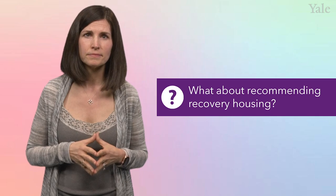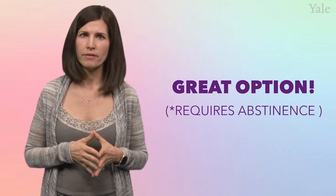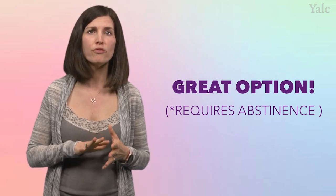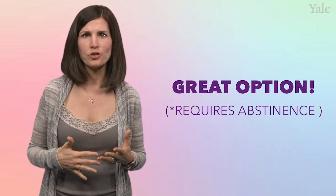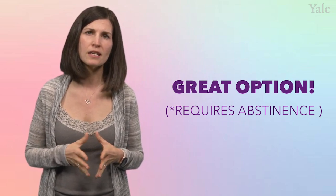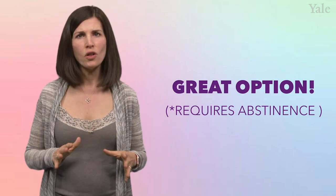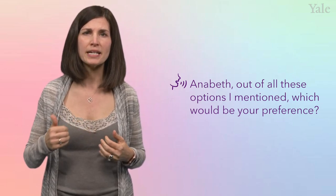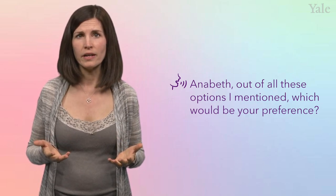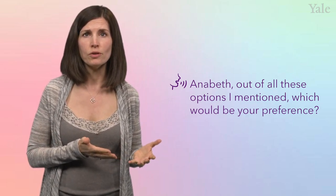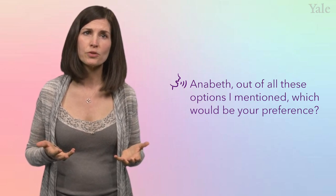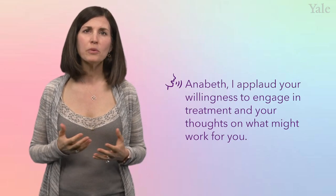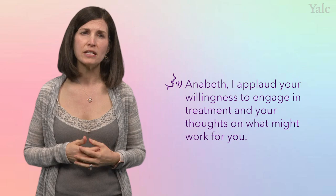What about recommending recovery housing? This could be a great option for Annabeth. Generally, recovery houses require a period of recovery before entering, so we will think about it once she has some abstinence under her belt. But it's a great idea to start talking about and planning for this as soon as possible. And finally, after all of this, we have to ask Annabeth what her preference is. We might feel strongly that she goes to a residential treatment program followed by a stay at a recovery house. But what if she has reasons for not wanting this? Annabeth suggests that she prefers to ask her supportive sister if she can live with her while engaging in intensive outpatient treatment. As her provider, I would applaud her willingness to engage in treatment and the thought that she's given to what might work for her.